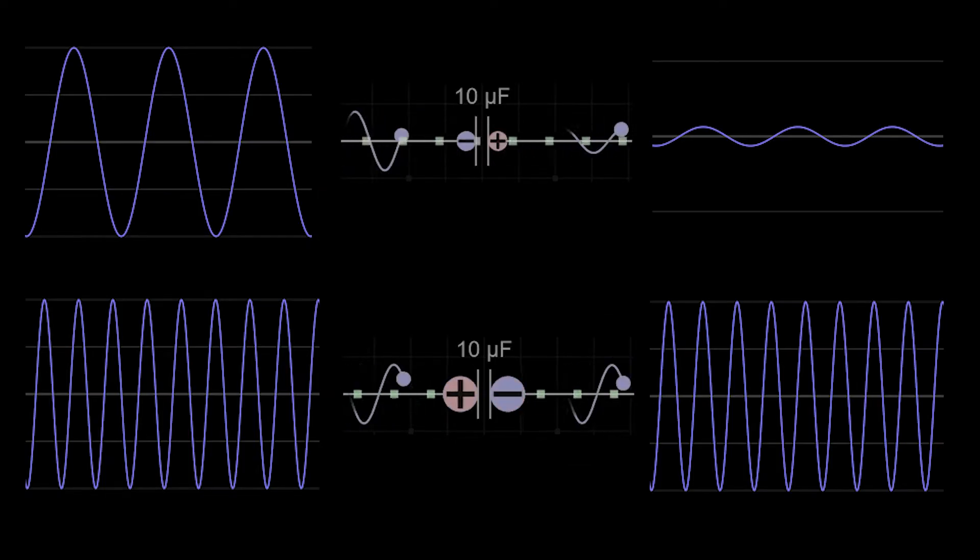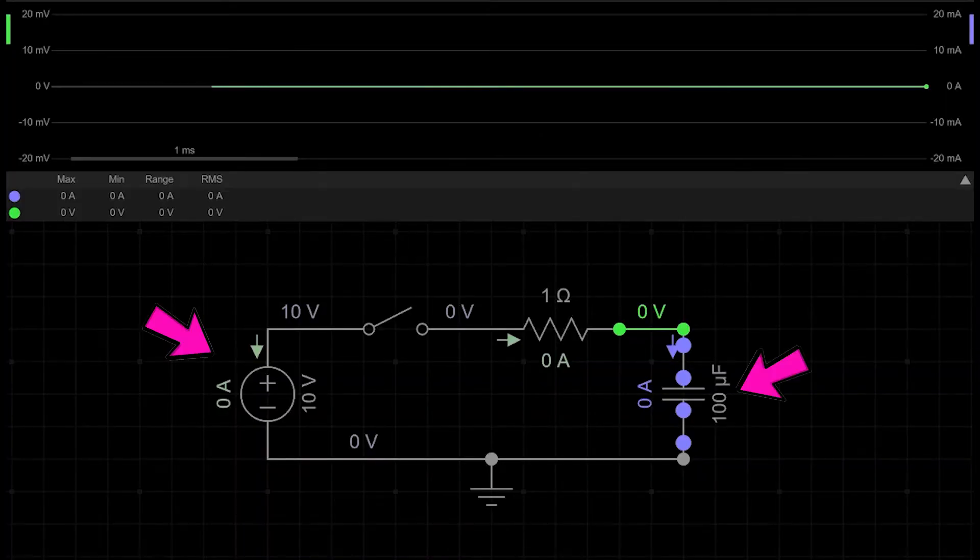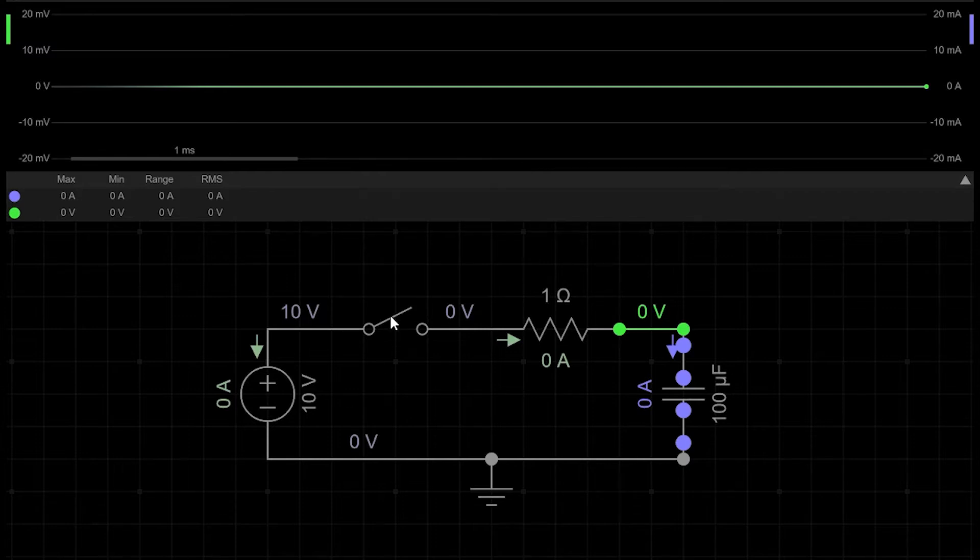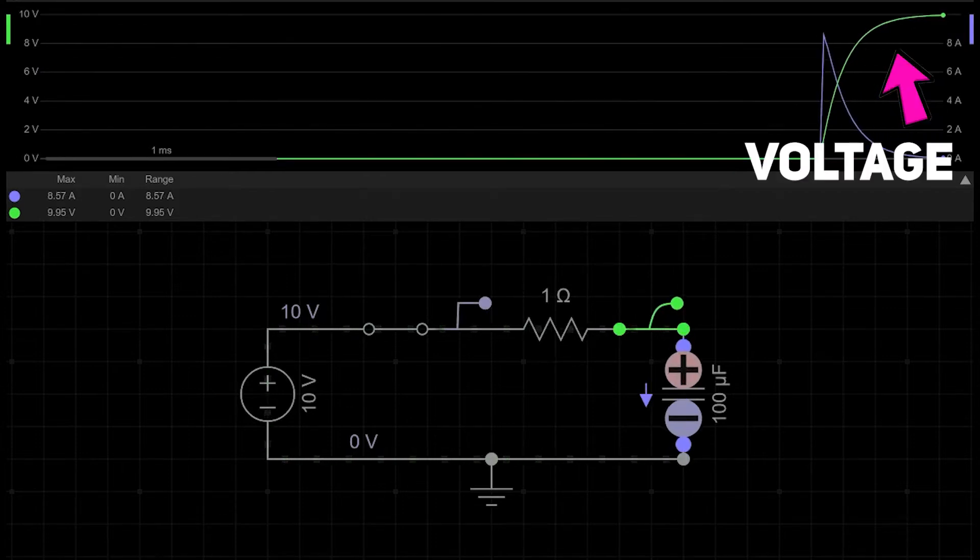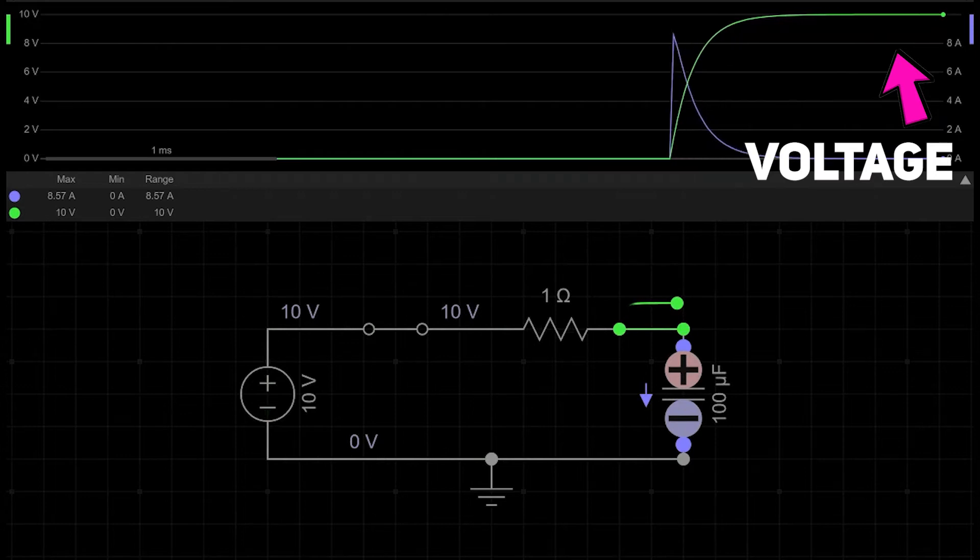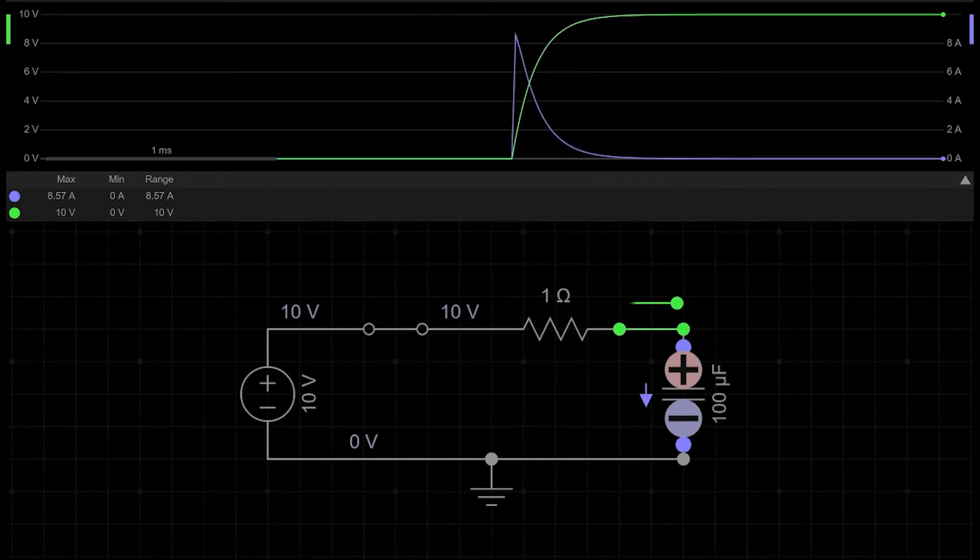Let's start straight from practice and connect a DC voltage source to a capacitor through a switch to have the opportunity to connect and disconnect it. When we close the switch, voltage across the capacitor increases. Charges from one plate of the capacitor flow to another plate. We simply charge the capacitor.